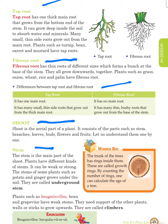What is stem? The stem is the main part of the shoot. Plants have different kinds of stems — it can be weak or strong. The stem of some plants such as potato and ginger grows under the soil; they are called underground stems. Plants such as bougainvillea, beans and creeping vine have weak stems. They need support of other plants, walls or stakes to grow upward. They are called climbers.